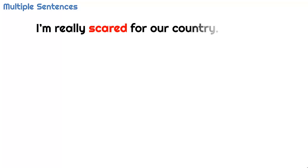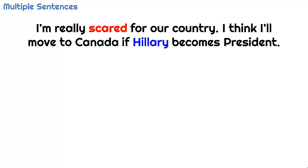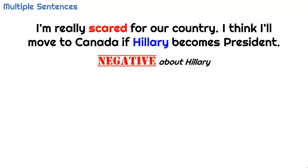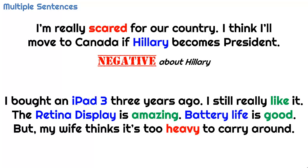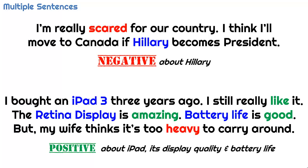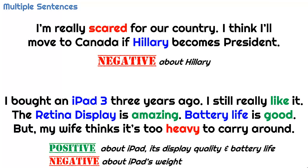Sometimes, information from multiple sentences must be used to determine the target of an opinion. 'I'm really scared for our country. I think I'll move to Canada if Hillary becomes president.' Without considering both sentences, we will not be able to determine that the author is negative about Clinton. Similarly: 'I bought an iPad 3 three years ago. I still really like it. The retina display is amazing. Battery life is good, but my wife thinks it's too heavy to carry around.' This sentiment is positive about the iPad, its display quality, and battery life, but negative about the iPad's weight.